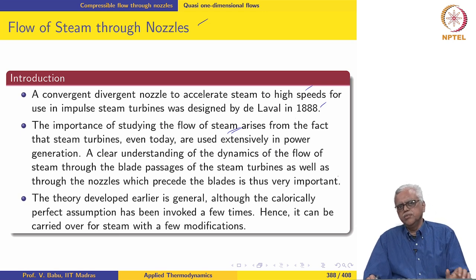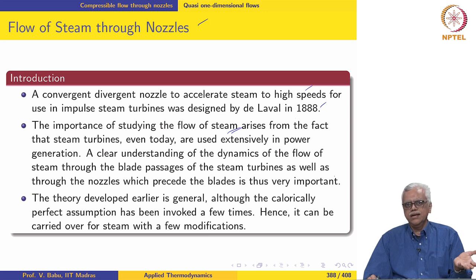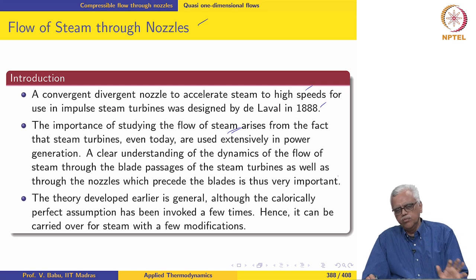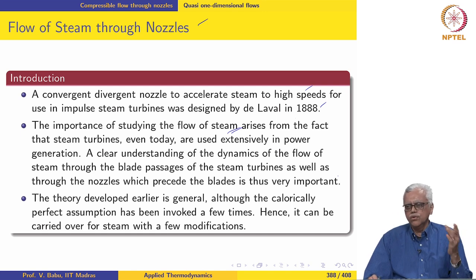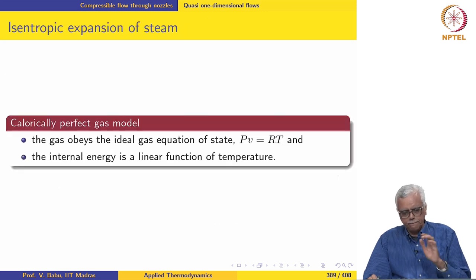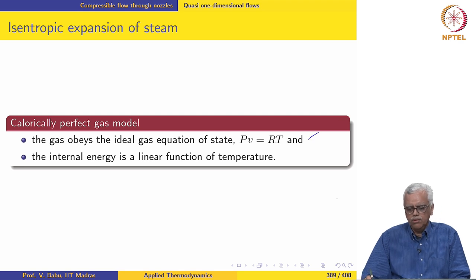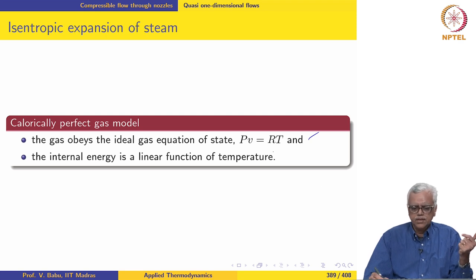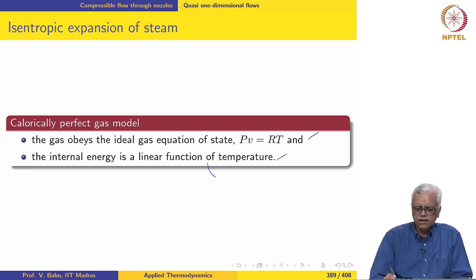However, the expressions have to be looked at again because we had invoked the calorically perfect assumption a few times. So wherever possible we will modify this, but as said before, we would not be looking at aerodynamic shocks in steam. The calorically perfect model used two important assumptions: that the gas obeys the ideal gas equation of state PV equal to RT, and that the internal energy is a linear function of temperature.